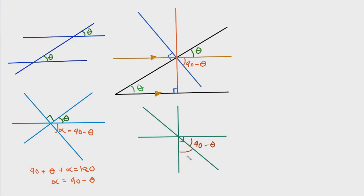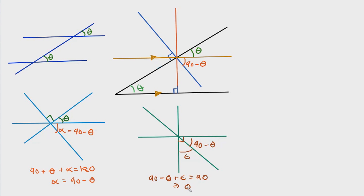I'm going to call this angle epsilon. We know that this is a right angle, so these two angles — epsilon and 90 minus theta — must equal 90. Applying simple algebra, we can say that 90 minus theta plus epsilon must equal 90.